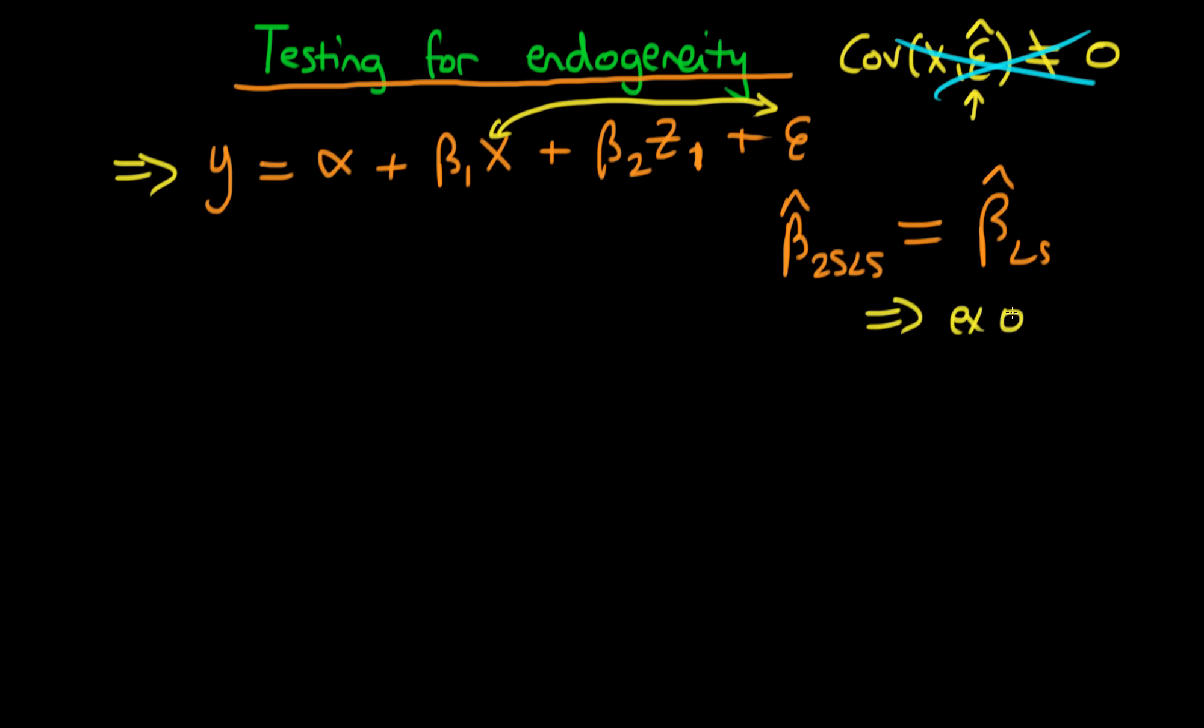Another method we could use would be to say, well, let's compare the values of two-stage least squares with those of least squares. Because if they are the same, then that's suggestive that x is exogenous because by estimating it via two-stage least squares, I actually haven't changed my parameter estimate for beta at all. Whereas if we actually had the case where beta two-stage least squares or beta hat two-stage least squares rather doesn't equal beta hat least squares, then in those circumstances, we would conclude that the variable x is endogenous.